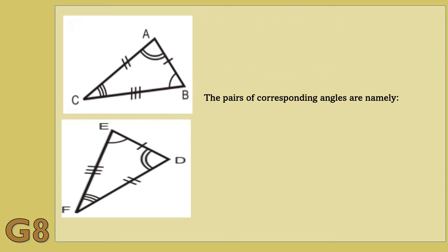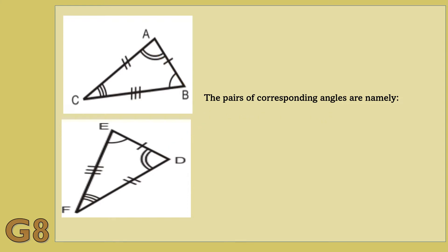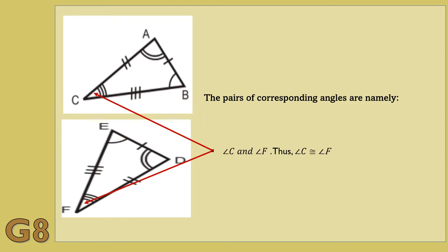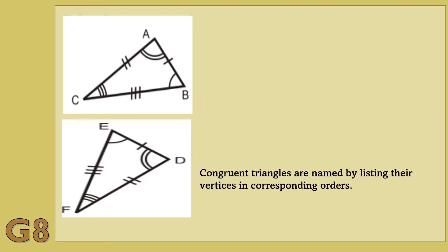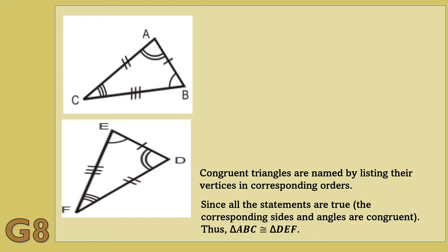Now, the pairs of corresponding angles are: angle A and angle D. Thus, angle A is congruent to angle D. Another pair of corresponding angles are angle B and angle E. Thus, angle B is congruent to angle E. Another pair of corresponding angles are angle C and angle F. Thus, angle C is congruent to angle F. Congruent angles are named by listing their vertices in corresponding orders. Since all the statements are true, the corresponding sides and angles are congruent. Thus, triangle ABC is congruent to triangle DEF.